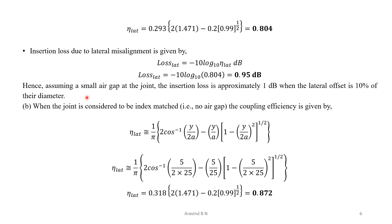One conclusion we can draw: assuming a small air gap at the joint, the insertion loss is approximately 1 dB when the lateral offset is 10% of the fiber diameter.